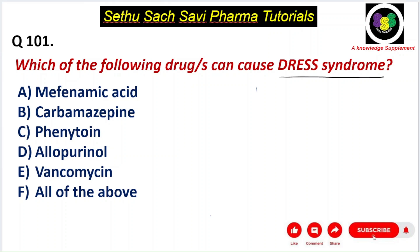Hi everyone, welcome back to the Pharma Q&A discussion. Today's Q&A is based on a recent alert issued for a commonly used therapeutic drug. The question of the day is: which of the following drugs can cause DRESS syndrome? Choice A: mefenamic acid, B: carbamazepine, C: phenytoin, D: allopurinol, E: vancomycin, and F: all of the above.